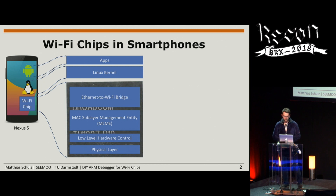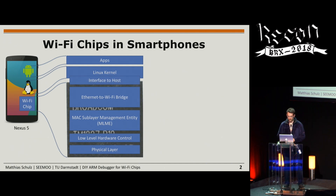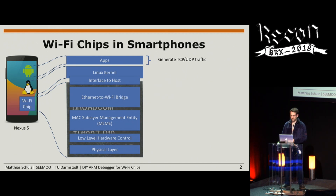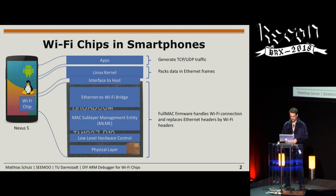For the operating system, the chip looks like an Ethernet to Wi-Fi bridge. You can control some Wi-Fi parameters, but the frames passed to the Wi-Fi chip are always Ethernet frames, and the chip converts them into Wi-Fi frames. If an app wants to communicate over Wi-Fi, it generates TCP or UDP traffic, sends it to the Linux kernel where it is packed into Ethernet frames, then passed to the Wi-Fi chip.